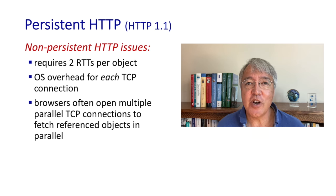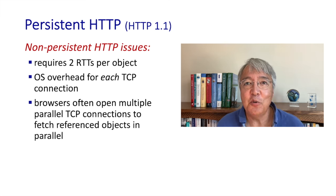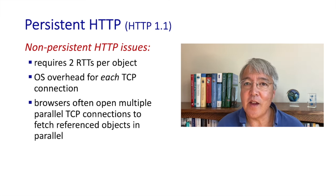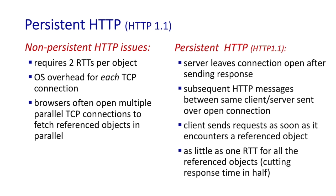Two RTTs are needed to fetch a web object. Multiple objects can often be retrieved in parallel, but still two RTTs is two RTTs. It's possible using a simple technique to cut this latency from two RTTs to one RTT — and that's persistent connection, the way most web servers now operate. In persistent HTTP 1.1, the server leaves the connection open after sending the response. Subsequent HTTP messages between the same client and server can be sent over this open connection without waiting an RTT to establish a new TCP connection, cutting response time in half to one RTT.